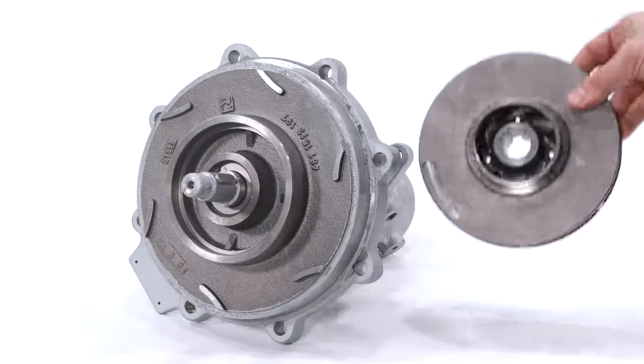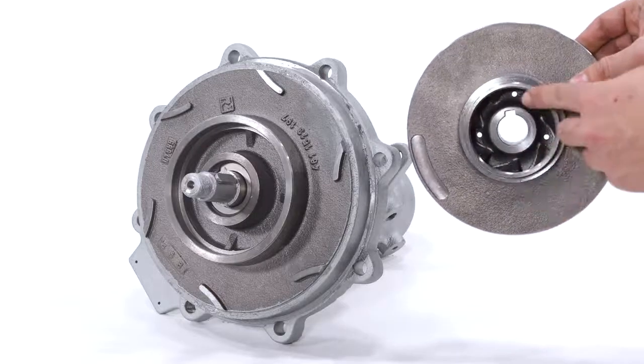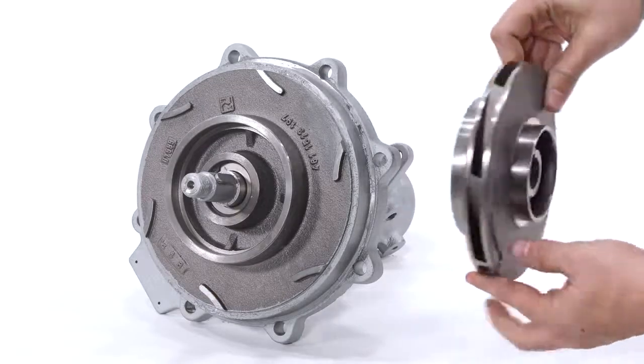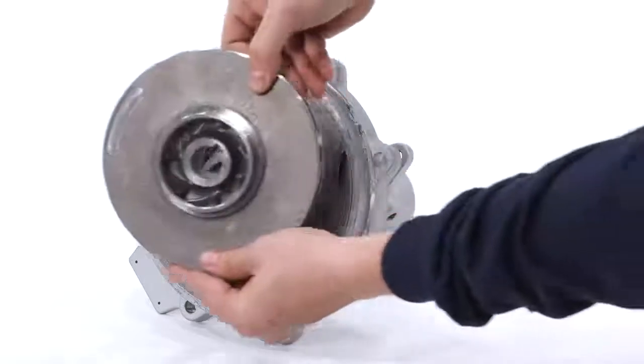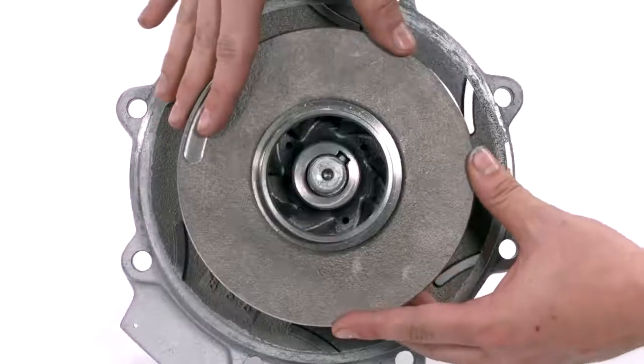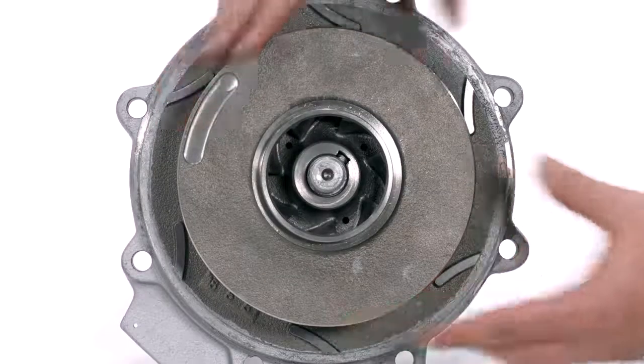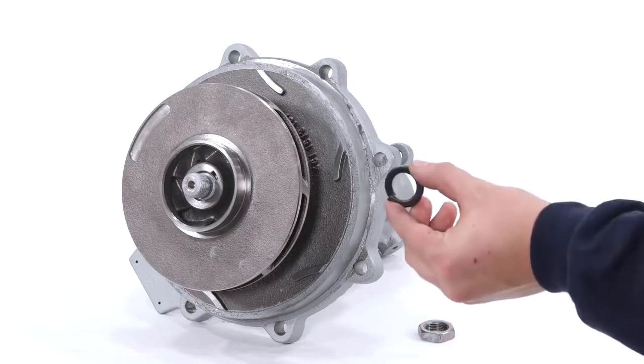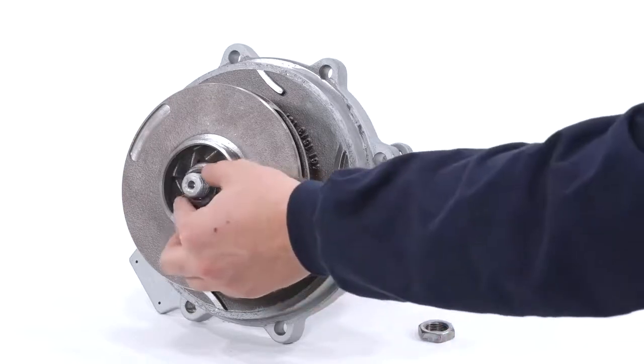Install the impeller, in the correct orientation, onto the shaft. Install the impeller lock washer and nut and tighten with a 30mm wrench.